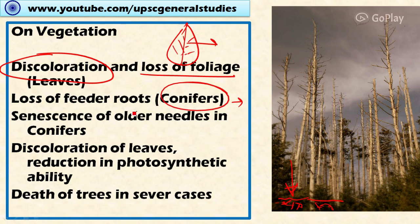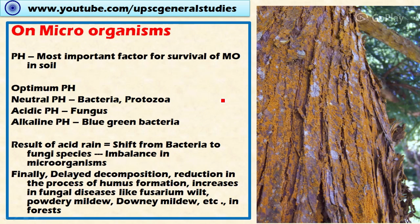Acid rain also leads to the senescence — that is, the aging — of older needles in conifers, meaning the death of older leaves is seen in conifers. Discoloration of leaves reduces the photosynthetic ability, that is, the food-producing ability of the leaves, thereby interfering with the life cycle of the plant system itself. In severe cases, it may lead to the death of the trees.